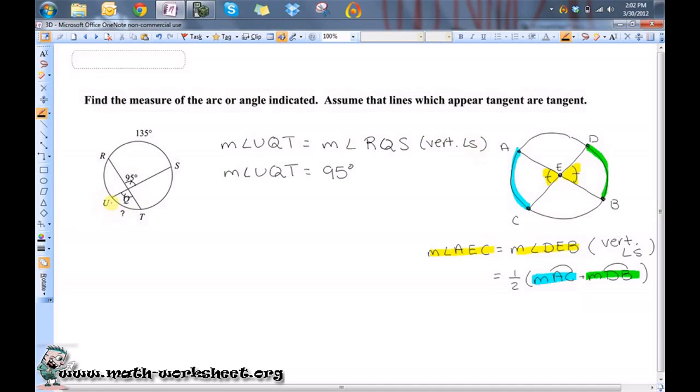But I want to find this arc here, so the way I'm going to do that is I'm going to say that I know that the measure of RQS is equal to one-half the measure of arc RS plus RQT, the measure of RQT.